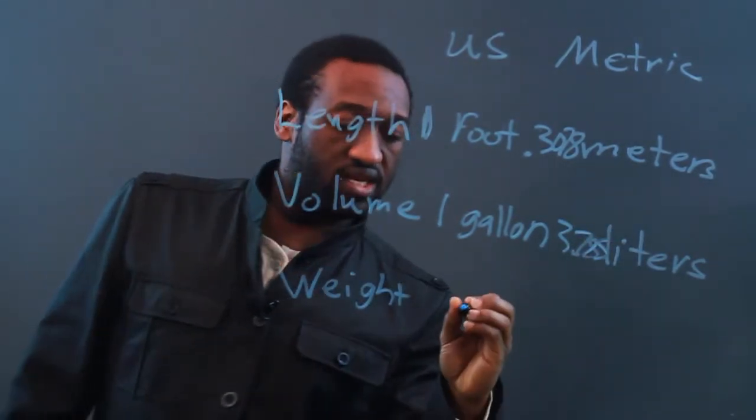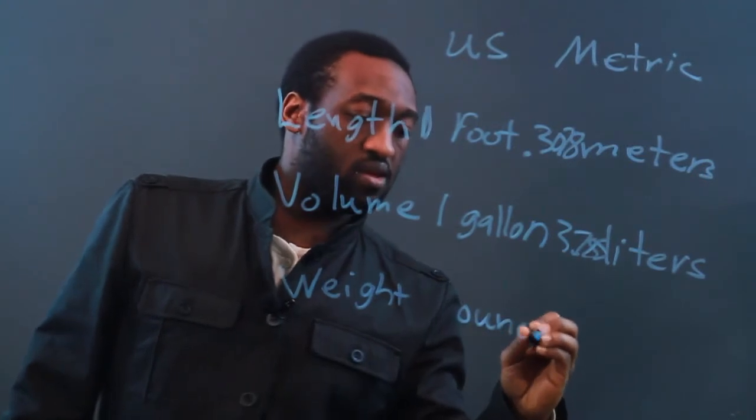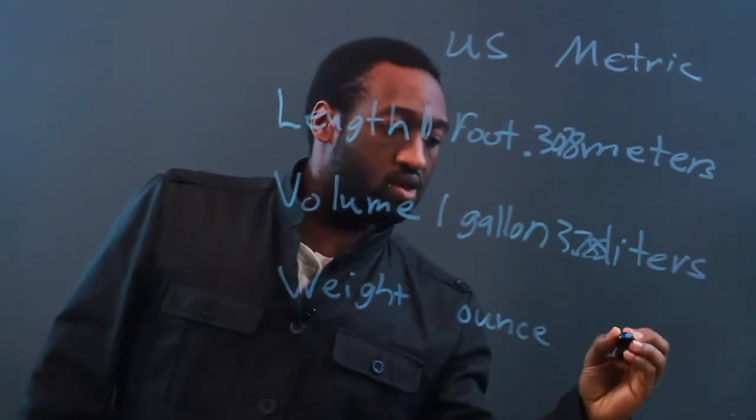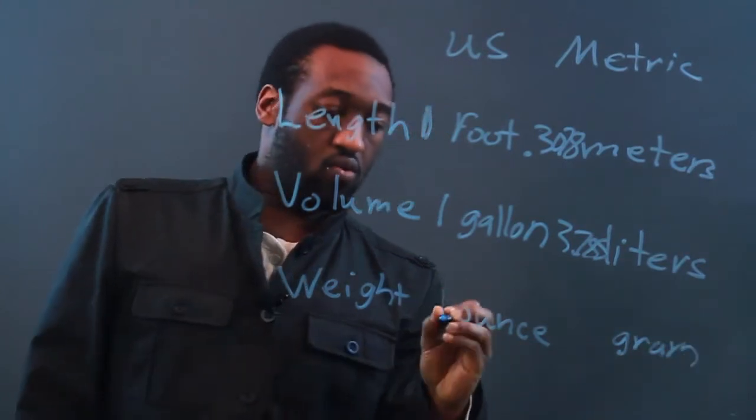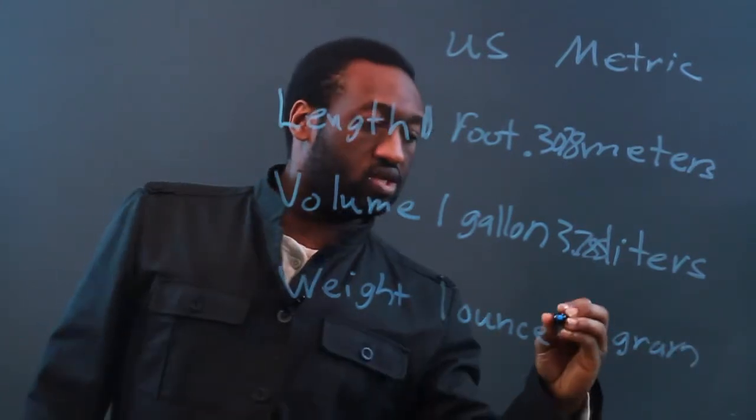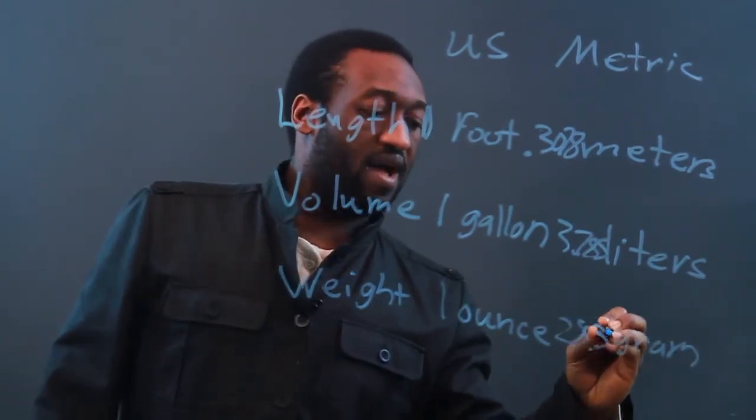For weight, in the U.S., we use the ounce. And in the metric system, we use the gram. One ounce is equal to 28.35 grams.